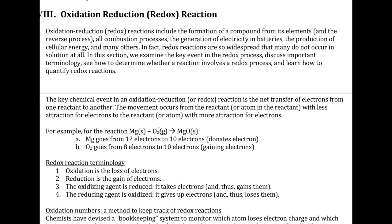If you look at the oxygen gas, this is the oxygen element, so it has eight electrons originally in atom form. And then in the product it's the oxide ion, which means it gained a couple of electrons to make it 10 electrons. So the oxygen has gone from eight to ten — it has gained electrons. The reaction occurs because magnesium donates electrons and oxygen accepts those electrons.